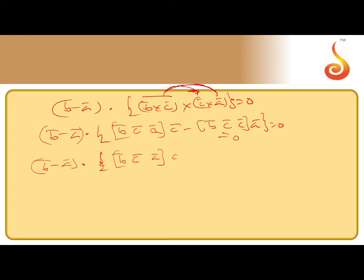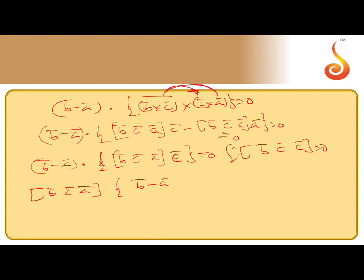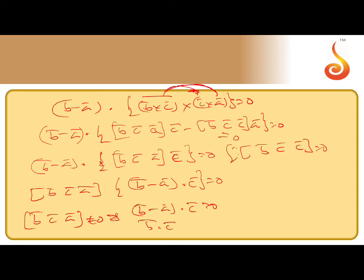Since [b, c, c] = 0, we have [b, c, a]·c̄ = 0 only if [b, c, a](b - a)·c = 0. Since [b, c, a] ≠ 0 (the vectors are not coplanar and the lines are intersecting), we get (b - a)·c = 0, which gives b·c - a·c = 0, therefore b·c = a·c.